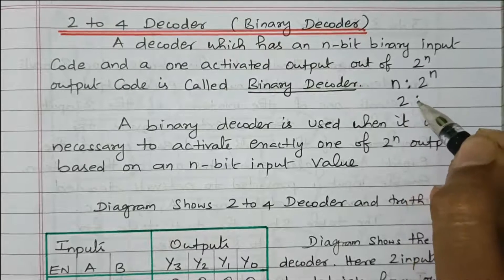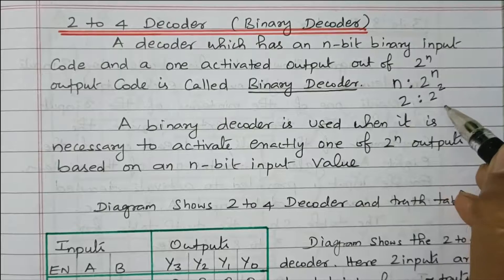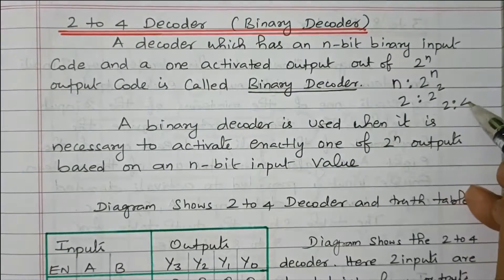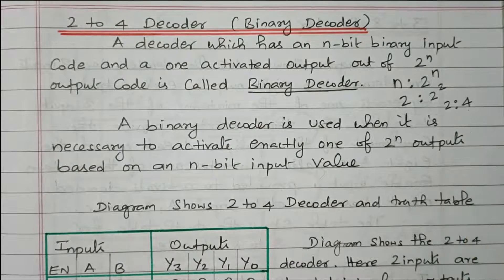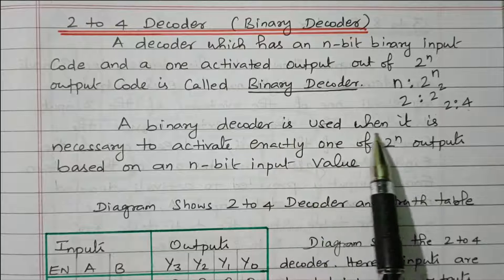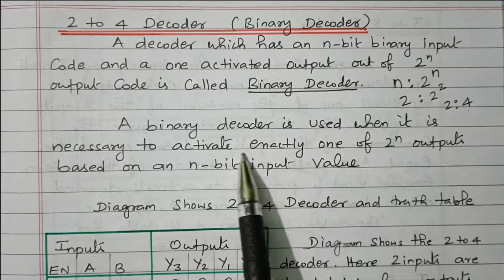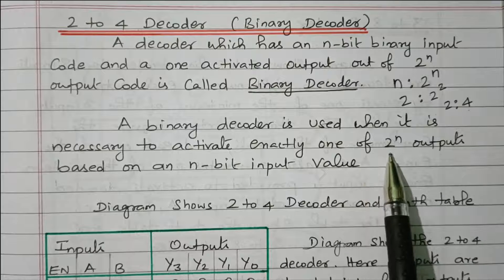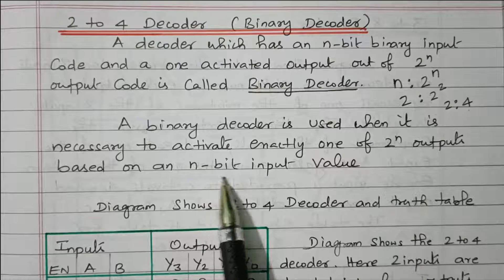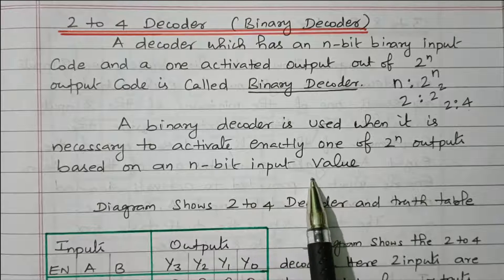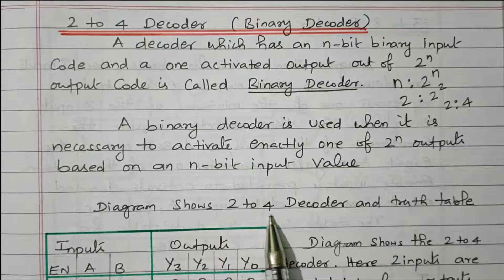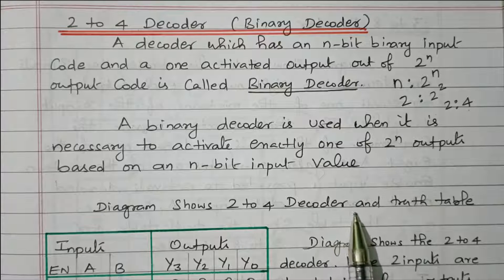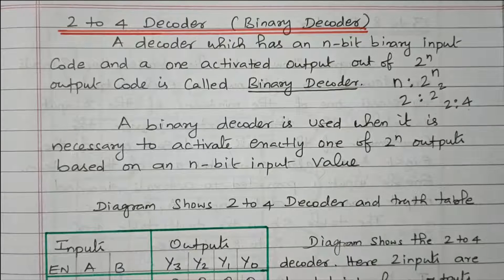Here n equals 2, so 2 to the power 2 equals 4. We are having 2 possible inputs and 4 possible outputs. A binary decoder is used when it is necessary to activate exactly one of the 2 to the power n outputs based on the n-bit input value. The diagram shows the 2-to-4 decoder and truth table. First we will see the truth table.